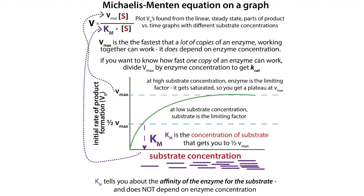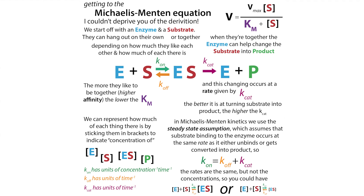We have our key terms: Kcat and Km. Kcat is our turnover number, telling you how fast the enzyme is converting substrate into product. We make those simplifications where we don't consider the product going backwards. We have the steady-state assumption — similar to equilibrium thermodynamics where the rate of binding equals the rate of unbinding. With Michaelis-Menten, we say the rate of substrate binding the enzyme equals the rate it either unbinds or gets converted into product.